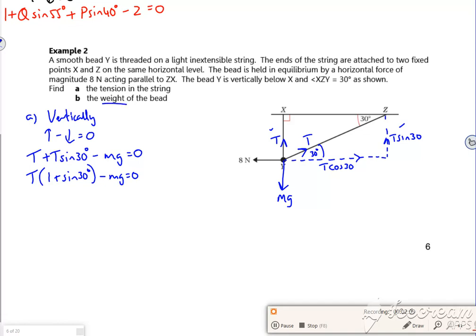Now they've got the weight in it. They say W for weight. I've put mg because it gets you used to using mg. But the weight is mg. Right, so I've got that as an equation.